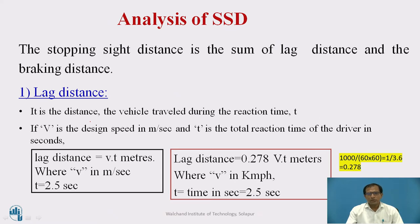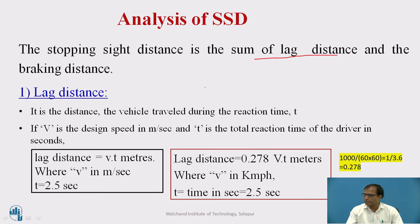Now, with this background, let us understand how we are going to find out the stopping sight distance. The stopping sight distance is the sum of the lag distance and the braking distance. By adding the lag distance and braking distance, we can obtain the stopping sight distance. First, we will calculate the lag distance, then we will go for calculating the braking distance.